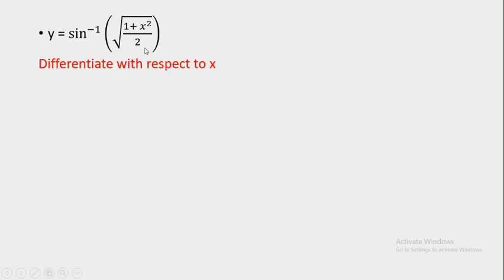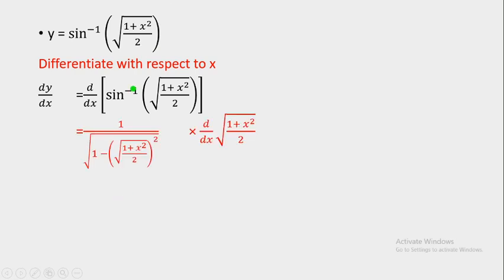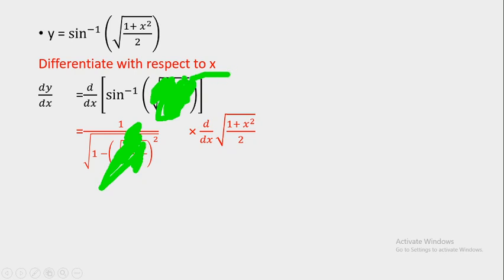Next sum: y is equal to sine inverse of root of (1 plus x square) upon 2. We differentiate with respect to x. The derivative of sine inverse x is 1 upon root of 1 minus x square. Whatever is there inside the bracket you have to put it as it is in place of x. But since it is not a standard x, you have to take its derivative again.